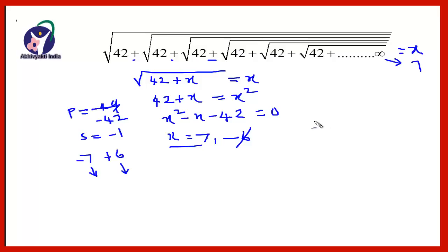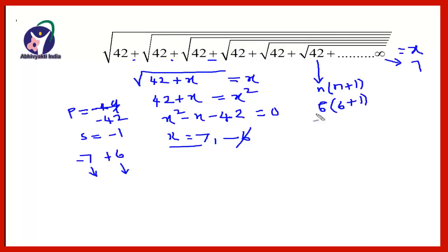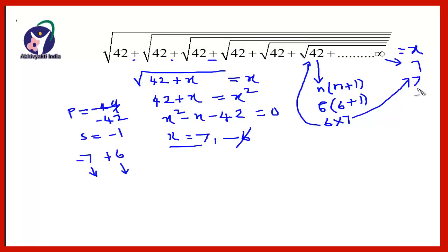Now the direct method: check whether 42 can be written in the form n times (n plus 1). In the previous questions with a minus sign, the condition was n times (n minus 1). Now for addition, the condition is n times (n plus 1). 42 can be written as 6 times (6 plus 1), that is 6 times 7. Out of these two numbers, for addition we take the bigger number. Therefore the value of this expression equals 7.